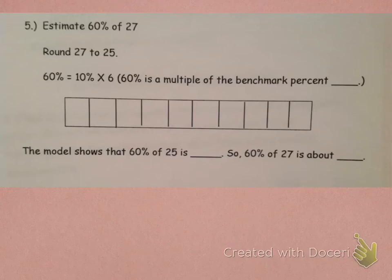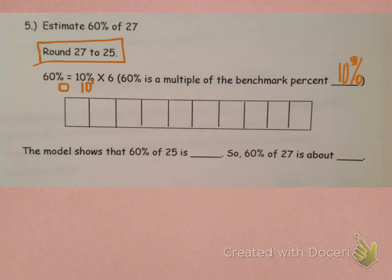Let's proceed to number 5. Number 5 says, estimate 60% of 27. Okay, so, we want to round 27 to 25. 60% equals 10% times 6. 60% is a multiple of the benchmark percent, 10%. So, at this time, I would like you to press pause. And it's a multiple of 10%. So, I would like you to write your 10% multiples at the top. And then, press play.